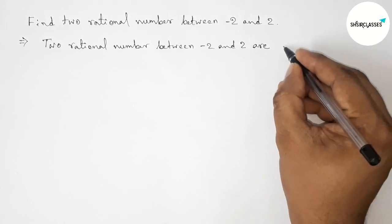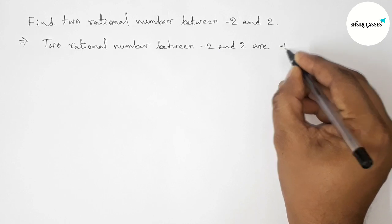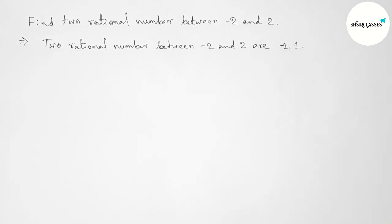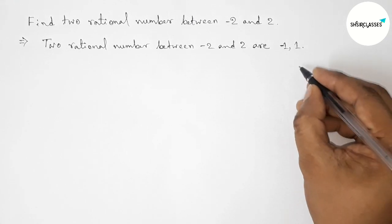The two rational numbers between minus two and two are: we can take minus one and one. So minus one and one are two rational numbers between minus two and two.